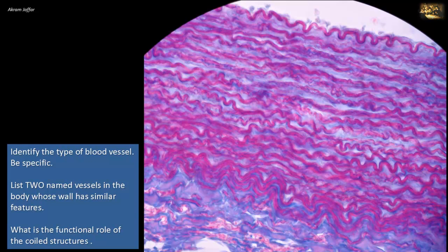For this, identify the type of blood vessel, be specific, list two named vessels in the body whose wall has similar features, and what is the functional role of the wavy and coiled structures.